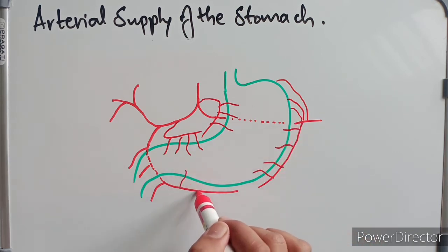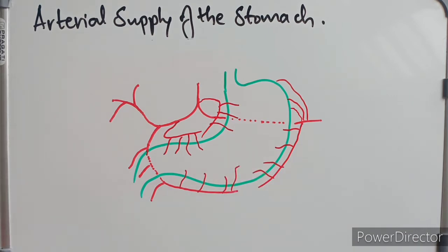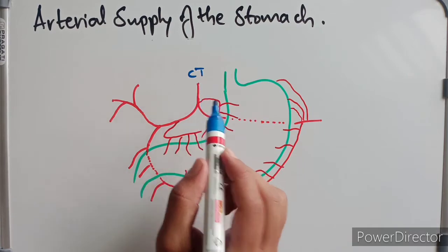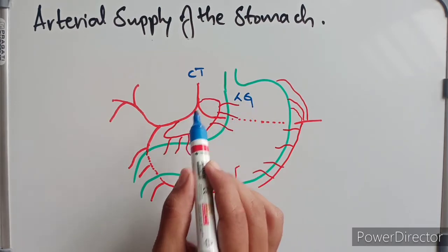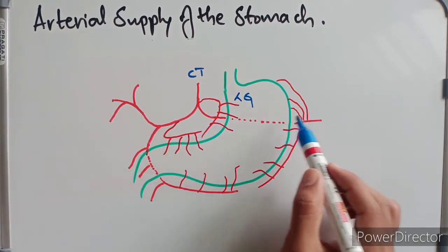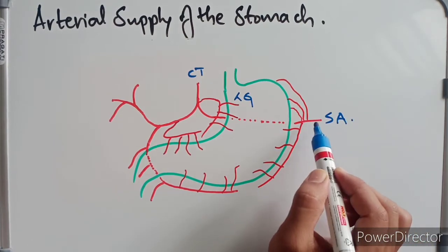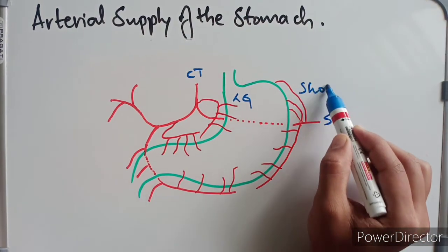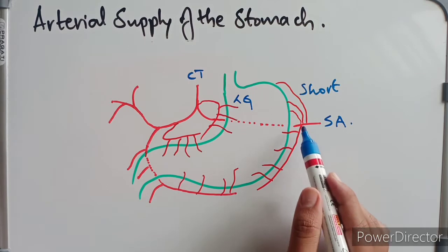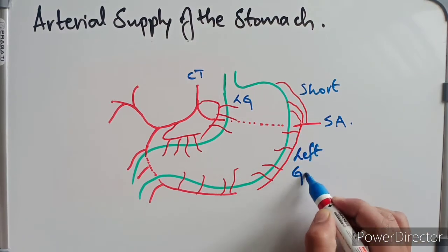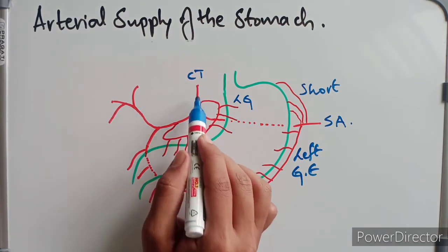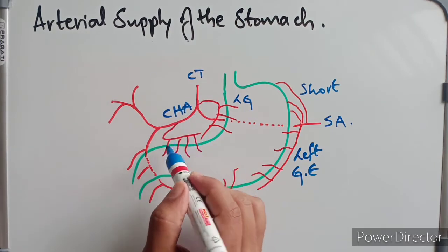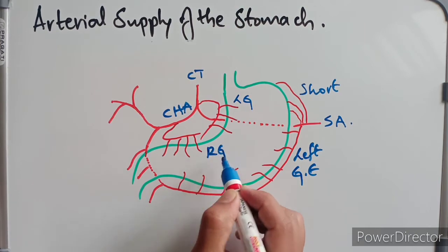The right gastroepiploic artery supplies along the greater curvature of the stomach up to the pylorus. From the celiac trunk, the left gastric artery supplies along the lesser curvature from the cardiac part through the body. The celiac trunk divides into the splenic artery and common hepatic artery. The short gastric arteries from the splenic artery supply the fundic region. The left gastroepiploic artery from the splenic artery supplies along the greater curvature. From the common hepatic artery, the right gastric artery supplies along the lesser curvature up to the pylorus.